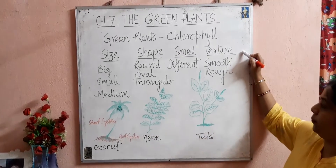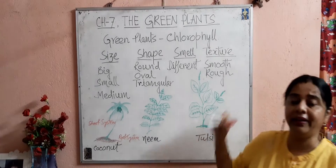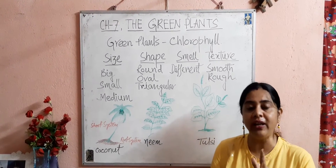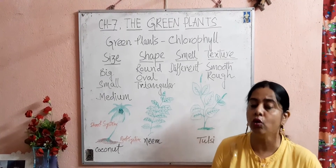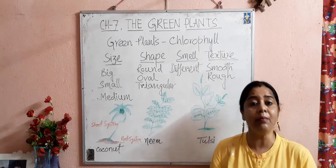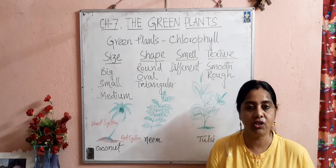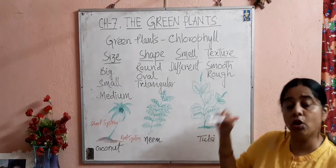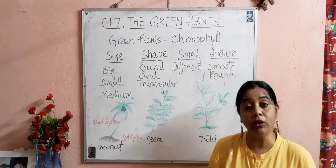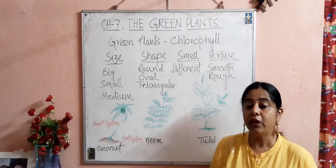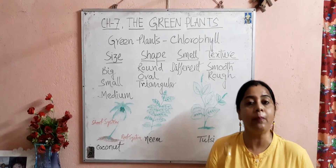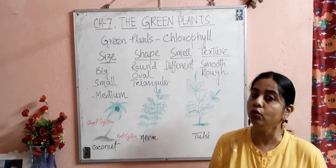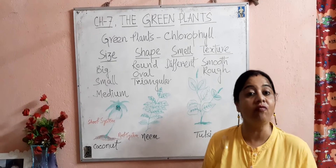Now, come to the texture. Texture means when you touch the leaf, you feel that some leaves are smooth to touch and some leaves are rough to touch. This feeling is known as texture. If you touch the leaves of different plants, you will feel that some leaves are smooth to touch and some are rough to touch.